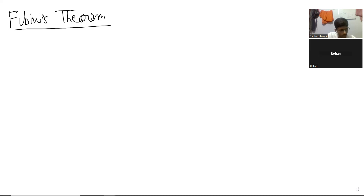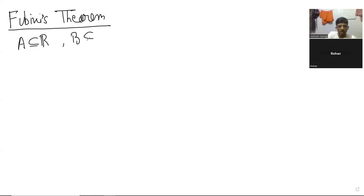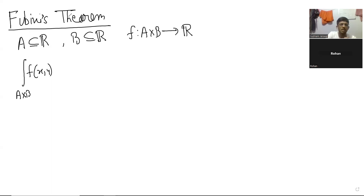I was just looking at it in Spivak's book, so I'm saying it in that way. Should I put it in R or in R^n? If I put it in R^n then I will have to take boxes in R^n. Let me just say it in R. So A is a subset of R, B is also a subset of R, and A×B is the region.